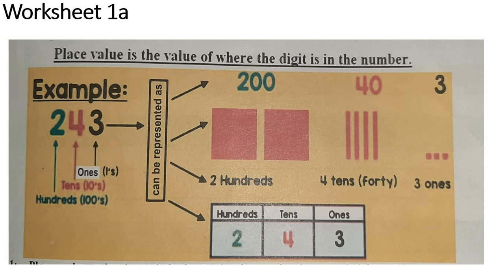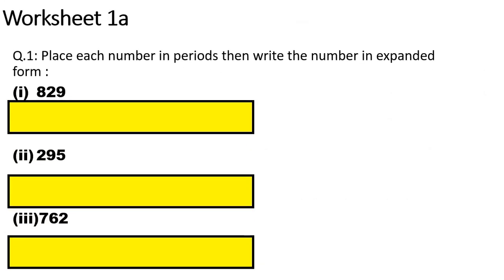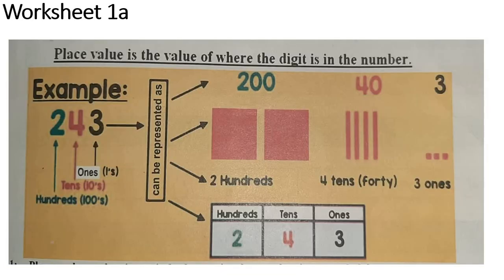For example, 243. If we are asked to put this number in expanded form, we need to know how much each digit is worth. How many hundreds in 2? 200. How many tens in 4? 4 tens. And how many ones in 3? 3 ones. So, 200 + 40 + 3. You will write 2 under hundreds, 4 under tens, and 3 under ones.